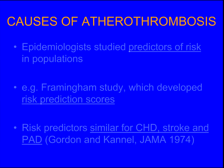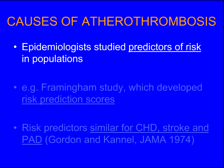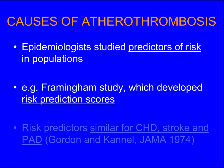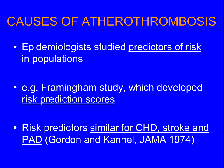What are the causes of atherosclerosis? Epidemiologists have been studying the predictors of risk in populations. The best known example is the Framingham study — a small town just outside Boston — where they put together different risk factors for predicting arterial thrombotic events into scores. The Framingham scores for coronary heart disease and stroke are well known and used throughout the world. Interestingly, the risk predictors for coronary heart disease are also very similar to those for stroke and peripheral arterial disease. So atherosclerosis is a systemic disease.